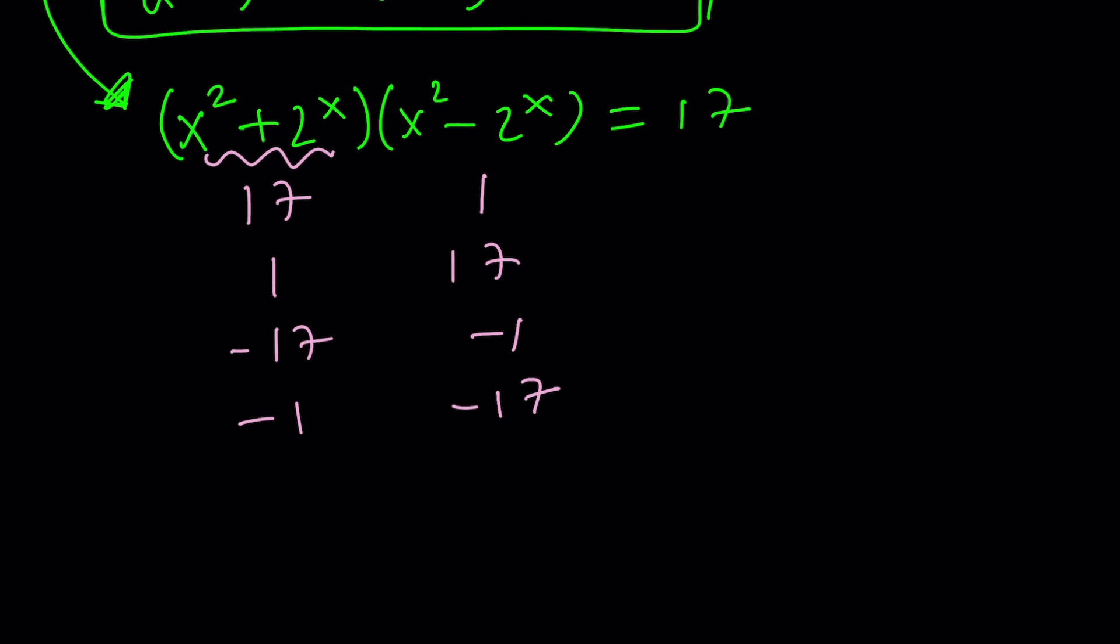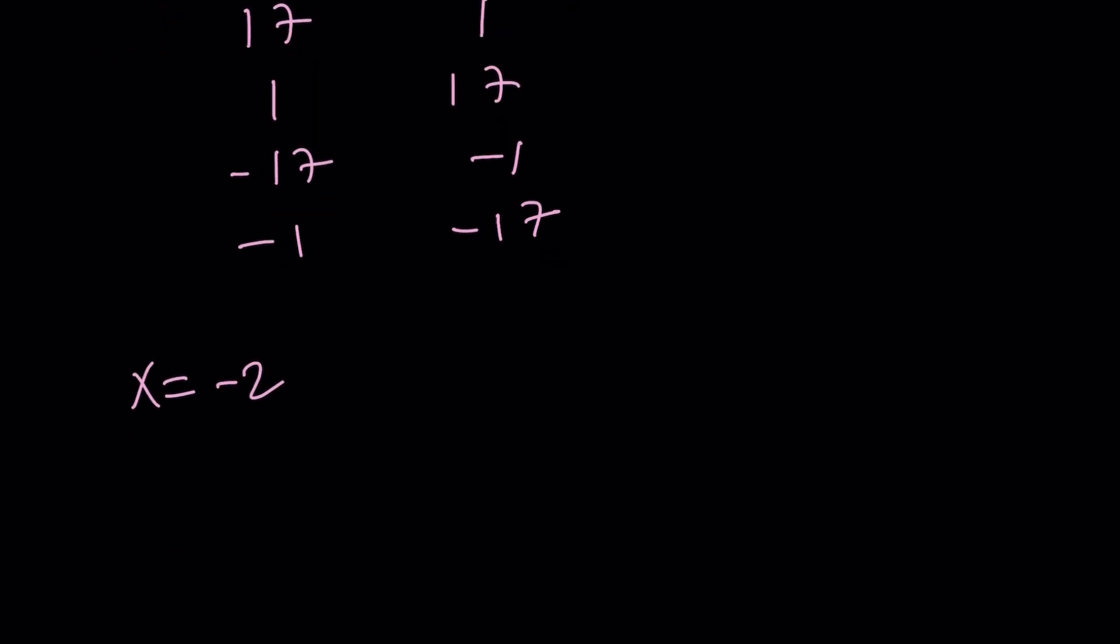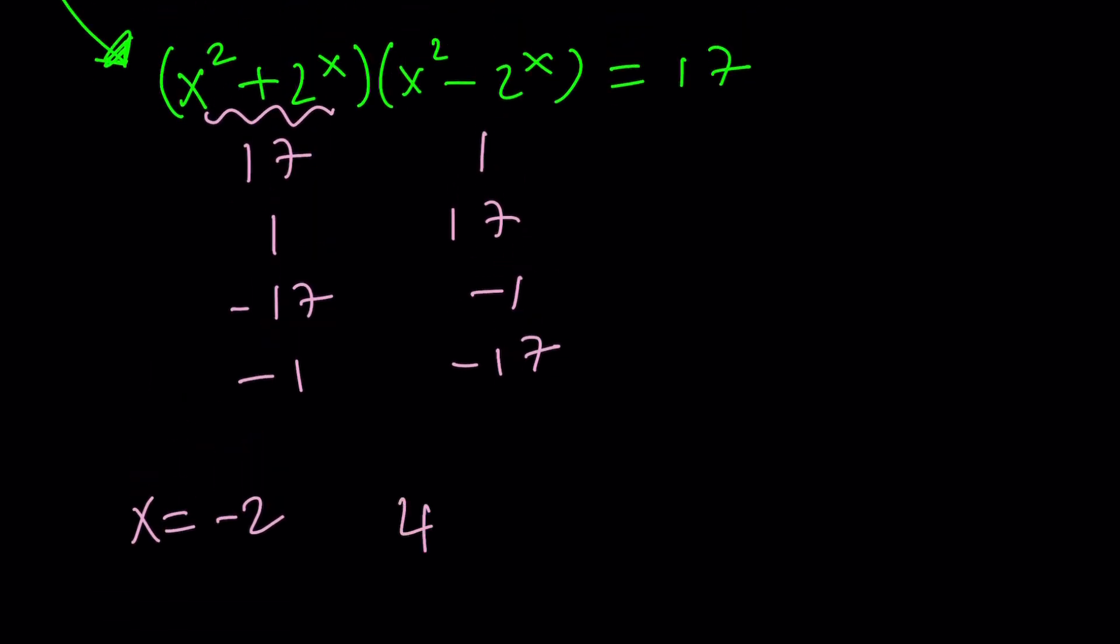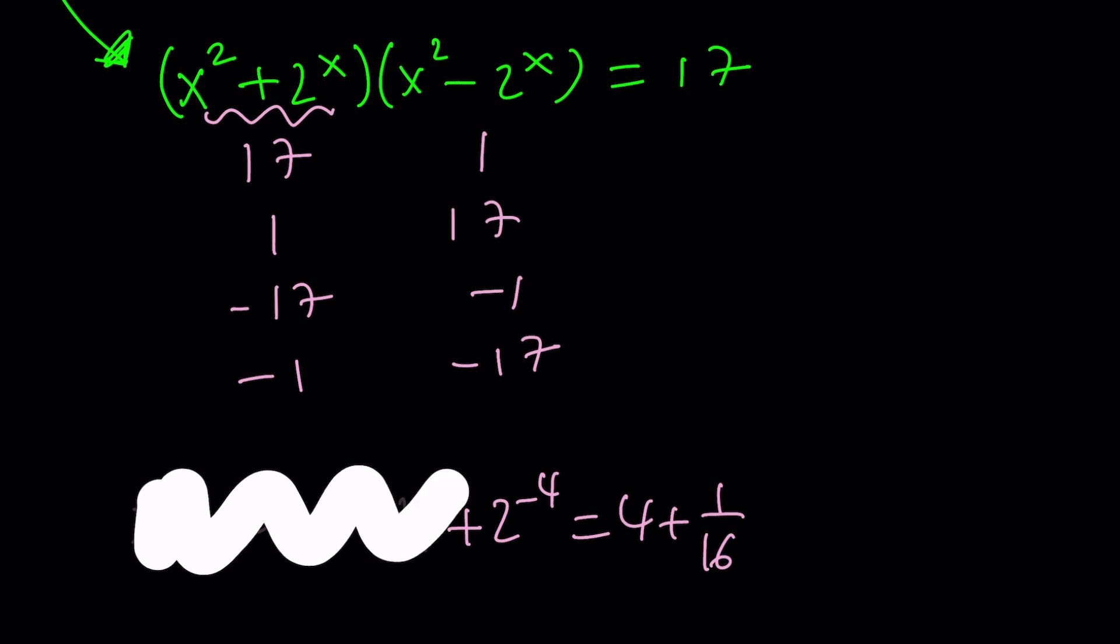Here's the problem. If x is a negative integer, then we're going to have like a fraction from here. And then when we squared, let's say x equals negative 2. Negative 2 squared is 4 plus 2 to the power of negative 4. That would be 4 plus 1 over 16, which is 4 point something. So that's not going to be an integer. There's no way it can work. We're going to look at the real case later, so let's stick to the integer cases right now.